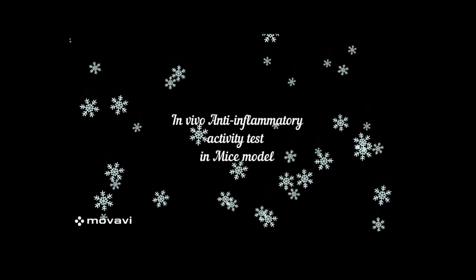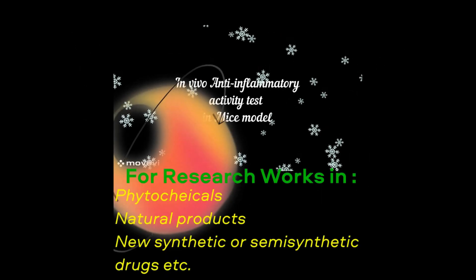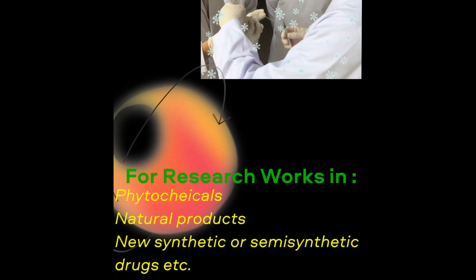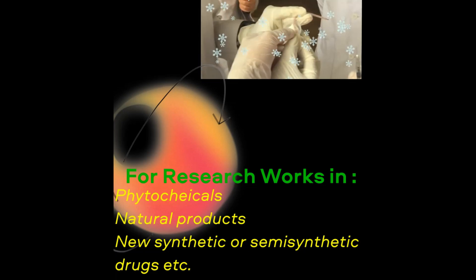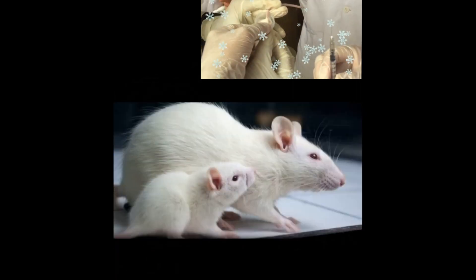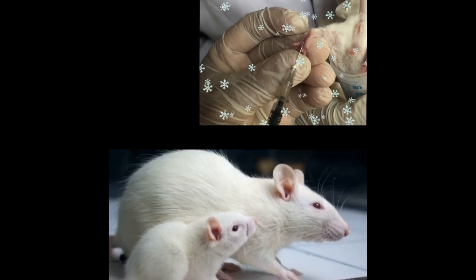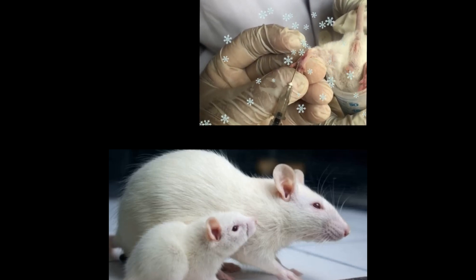In vivo anti-inflammatory testing is done in different research to study the anti-inflammatory activity of different natural products, phytochemicals, synthetic drugs, and other agents intended for medicinal use. It is done in mice or rats by injecting the inflammatory agent after treatment with a test substance.